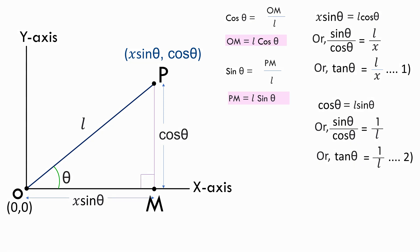Let's look at the equations. Both the equations has tan theta as its left hand side. So, we can equate the right hand side of the first equation with the right hand side of the second equation. And that gives us l by x equals to 1 by l.